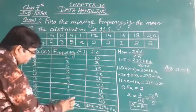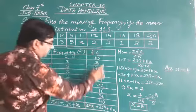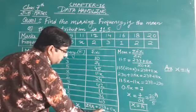Now we will write all the frequency. That is, the summation of fi will be 20 plus x, and summation of fi xi will be 237 plus 11x.